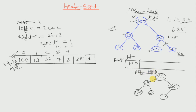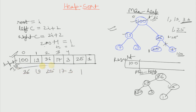The array in which the max heap was stored will also change accordingly, and this array will become: 36, 19, 25, 17, 3 and 1.